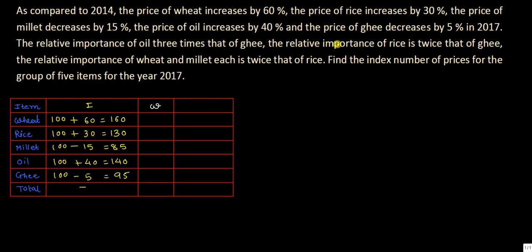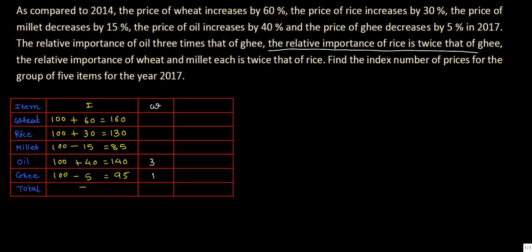Now find W, the relative importance. Let the relative importance of ghee equal 1. Oil is three times ghee, so oil equals 3. The relative importance of rice is twice that of ghee, so rice equals 2. The relative importance of wheat and millet are each twice that of rice, so wheat equals 4 and millet equals 4. Sigma W equals 4 plus 4 plus 2 plus 3 plus 1, which is 14.